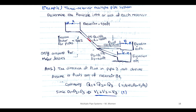We first assume that water flows out of reservoir A, down toward C, and also out of reservoir B toward C. If this assumption is correct, all governing equations will be satisfied. Otherwise, we must change the assumed direction and solve again. We start with the continuity equation.